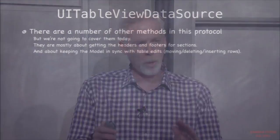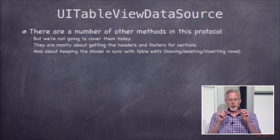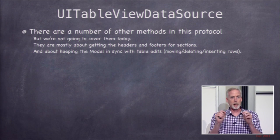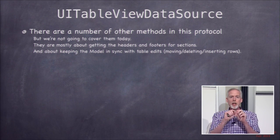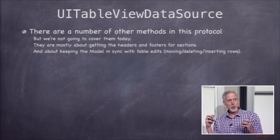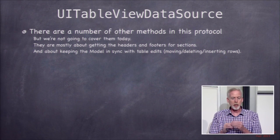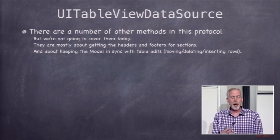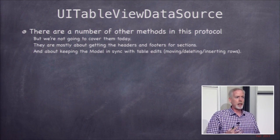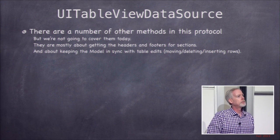There are other methods in the data source protocol mostly for getting titles of headers and footers. You'll need the one that returns the string for a section header — in your homework that'll be the country name. There are also methods for editing: rows can be removed and moved around, and those methods let you keep the table in sync with your model when things change.